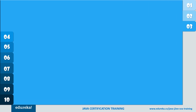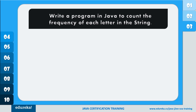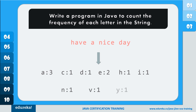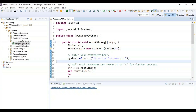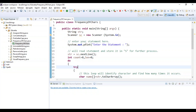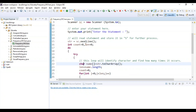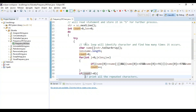Now let's see the next program. The problem statement is: write a program in Java to count the frequency of each letter in the string. You have to check the frequency of the characters present in the given string. For example, for the statement 'have a nice day', it should display the frequency accordingly — occurrence of 'a' is 3, 'c' is 1, 'd' is 1, 'h' is 1, and so on. In the code, I have created a string variable, used scanner class to read input, initialized count and length variables to 0, and used the toCharArray method to identify the count of characters.